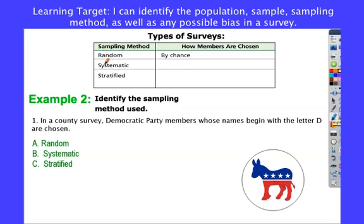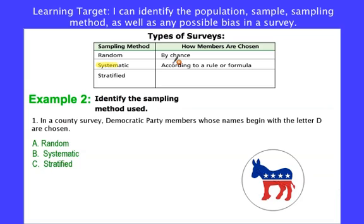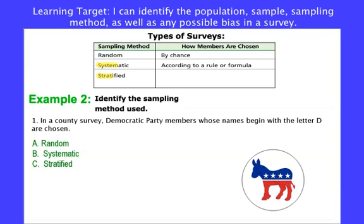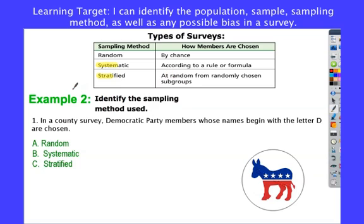Systematic — you can see the root word — means according to a rule or formula. Stratified comes from the root word strata, like stratus clouds which are layered. Stratified is when you choose randomly from different subgroups. Going back to our broccoli survey: if the cafeteria randomly chose students from each lunch — first, second, and third — the subgroups would be the different lunches, and you would randomly choose from those subgroups, so it's not completely random.